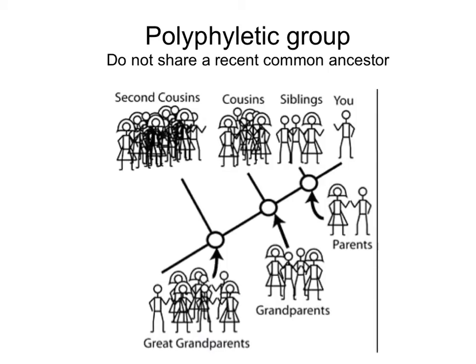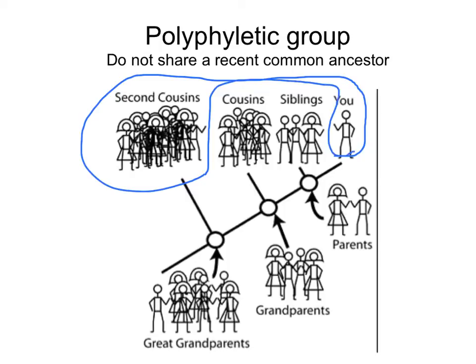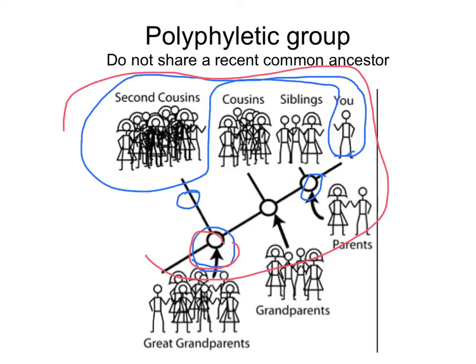To bring this to a more familiar example, it is like if you decided to move in with your second cousins and form a family. You would be forming a polyphyletic group, because your recent ancestors and your second cousins' recent ancestors are not the same. You do not share a recent common ancestor unless you include your great-grandparents and everyone who derived from them — that would be the only way to have a monophyletic group.